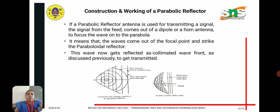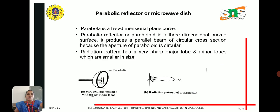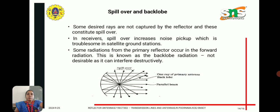When a parabolic reflector is used for transmitting a signal, the signal from the feed comes out of a dipole or horn antenna. The waves emerge from the focal point, strike the parabolic reflector, and are then reflected and collimated into a parallel wavefront for transmission, as shown in the diagram. The parabola is a two-dimensional plane curve whereas the parabolic reflector is a three-dimensional curved surface, producing a parallel beam of circular cross section. The radiation pattern has a very sharp major lobe and smaller minor lobes. Spillover and back lobe radiation may occur where some rays are not captured by the reflector; in receivers, spillover increases noise pickup, which is troublesome in satellite ground stations. Back lobe radiation is not desirable as it can interfere destructively.